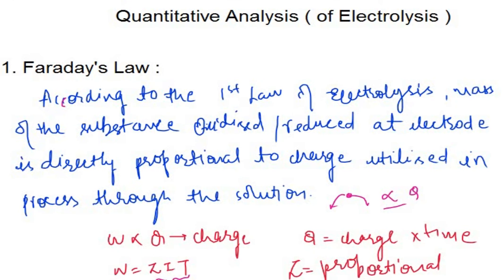Z is finally the molar mass divided by n factor times 96500, where n factor is the change in oxidation state for oxidation and reduction. That's how we define the quantitative analysis of electrolysis.